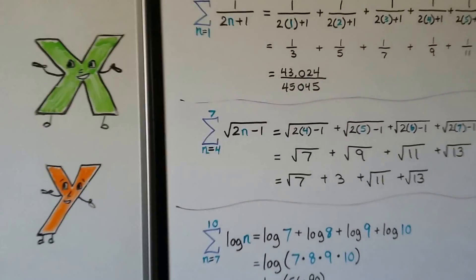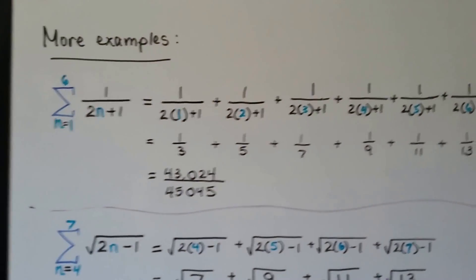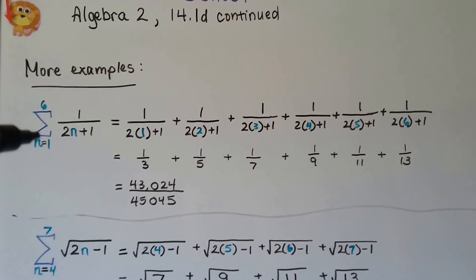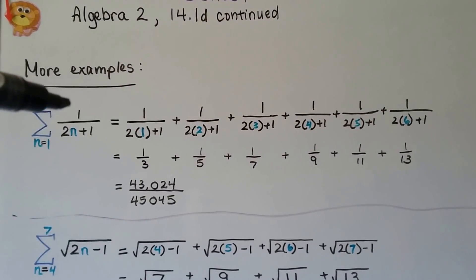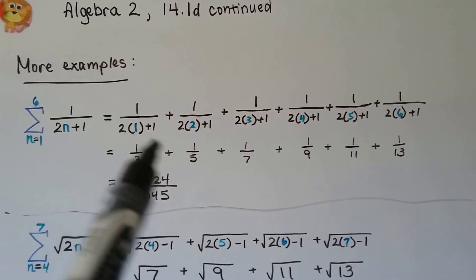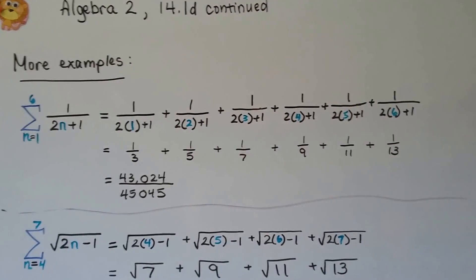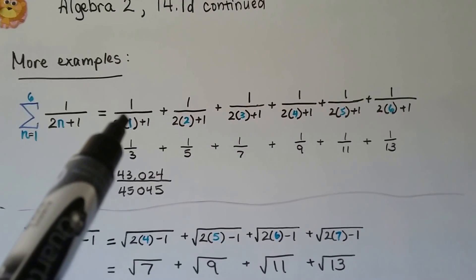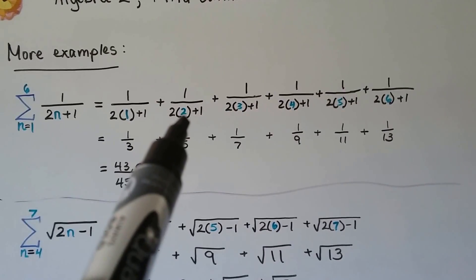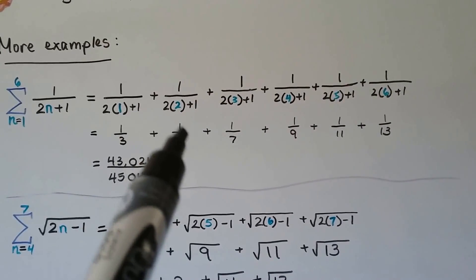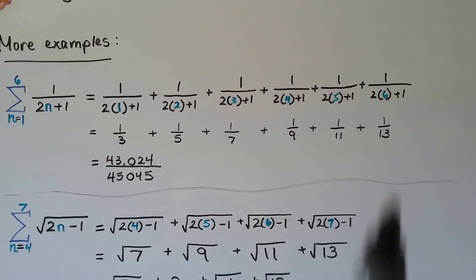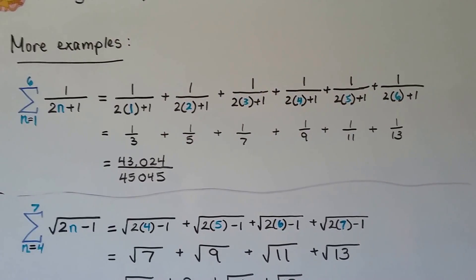Here are some more examples. We've got fractions — 6 terms, and our general rule is the quotient of 1 and 2n plus 1. Substituting 1 through 6: 2 times 1 plus 1 is 3, so we have one-third; 2 times 2 plus 1 is 5, so we have one-fifth, and so on. We have to find a common denominator to add those, and we end up with one big, huge fraction.